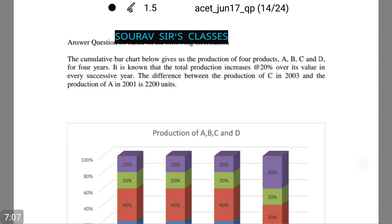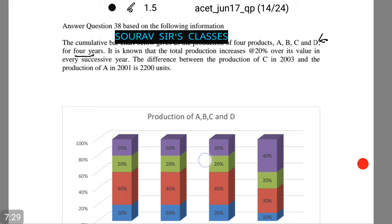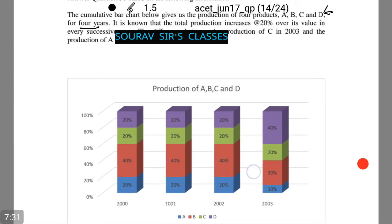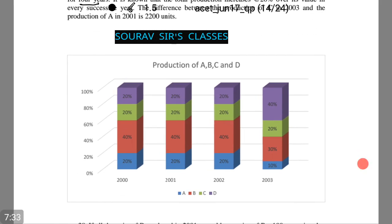Now in the next one we have a cumulative bar chart below given us the production of 4 products A, B, C, and D for 4 years. It is known that total production increases with 20% over its value in every successive year. Therefore the difference between the production of C in 2003 and the production of A in 2001 is 2200 units. Let us see the chart.